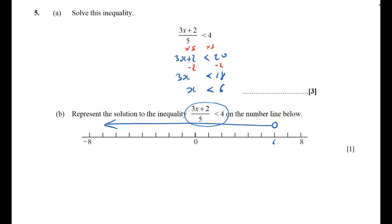If you're not happy about solving inequalities like that, you could always set it up: 3x plus 2 over 5 equals 4. Times both sides by 5 to get 3x plus 2 equals 20. Take away 2 from both sides to get 3x equals 18, and then divide both sides by 3 to get x equals 6.